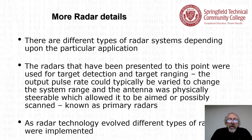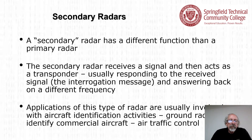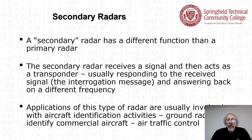There are different types of radar systems. The radars presented so far were used for target detection and ranging — known as primary radars, with physically steerable antennas. As radar technology evolved, secondary radars were implemented. A secondary radar receives a signal and acts as a transponder, responding to the interrogation message and answering back on a different frequency. Applications include aircraft identification in air traffic control.